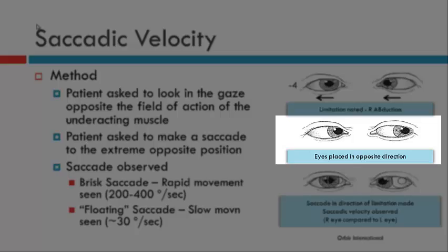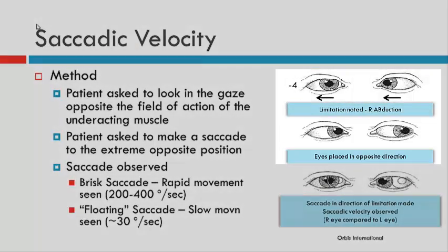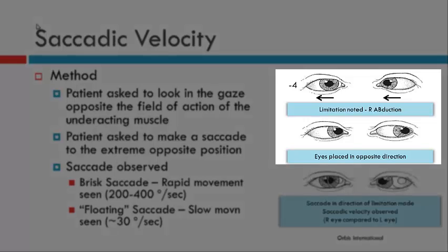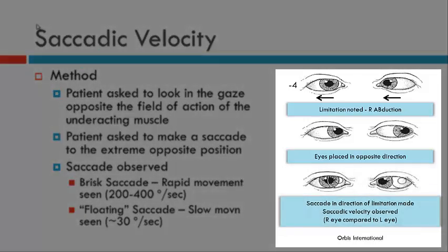So the abduction deficit occurs in right gaze, so we would ask the patient to look into left gaze. At this point, we're not doing any assessment — we're simply asking the patient to move their eyes into the opposite position of gaze. Then we ask the patient to make a saccade towards right gaze, towards the field of action of the lateral rectus. This is what we're observing — the saccade into right gaze.